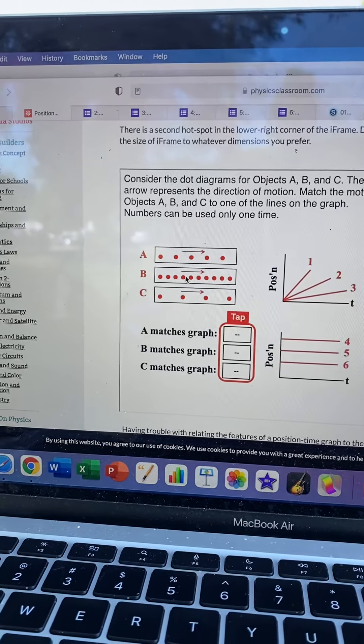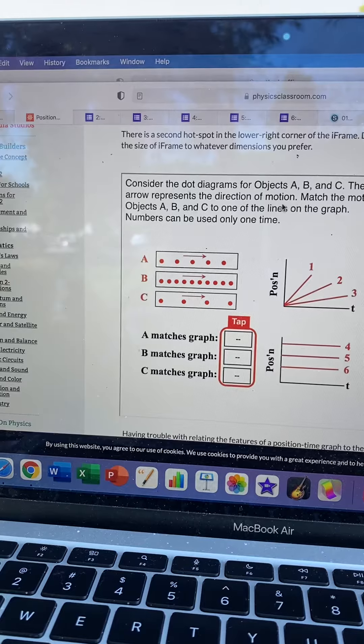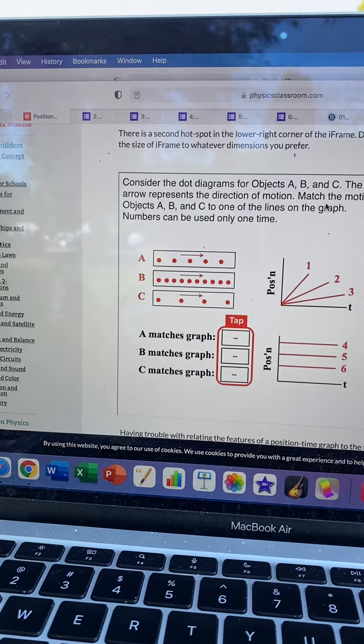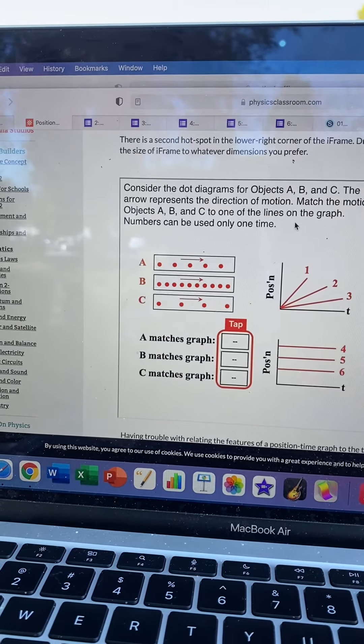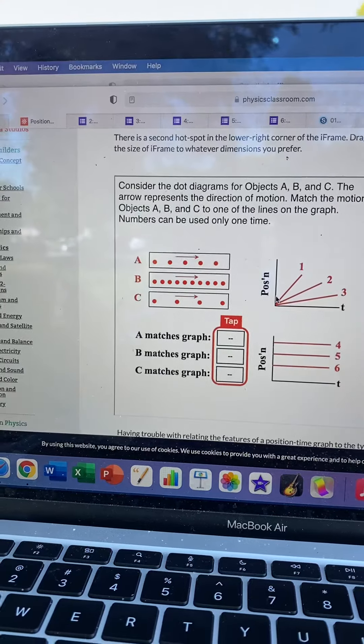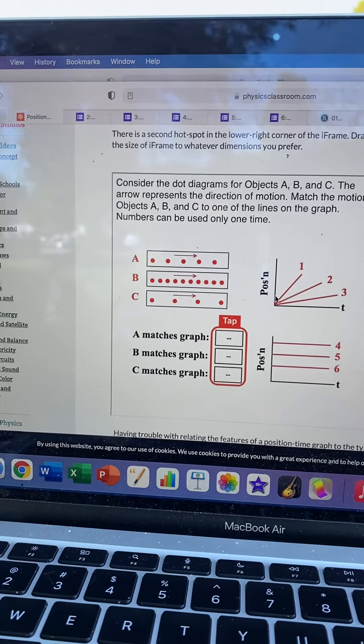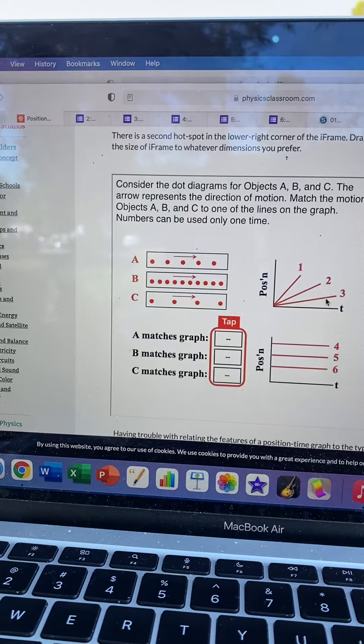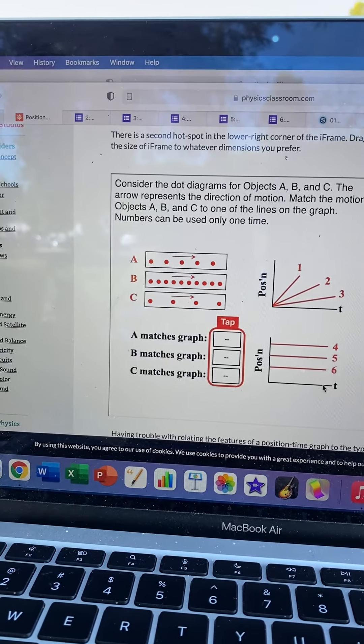So it says, consider A, B, and C. The arrow represents the direction of motion. Match the motion to one of the lines on the graph, and you can only use things one time. So we've got three position graph options here and three more down here. Six options in total.